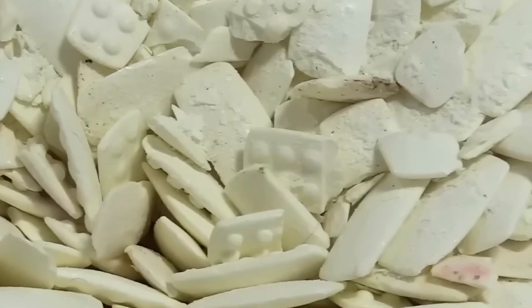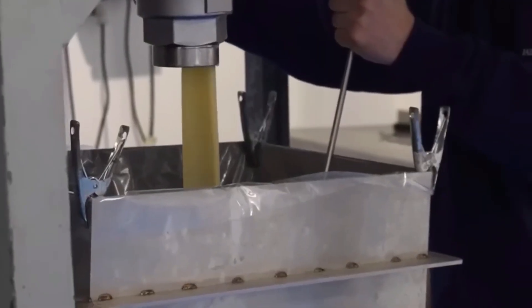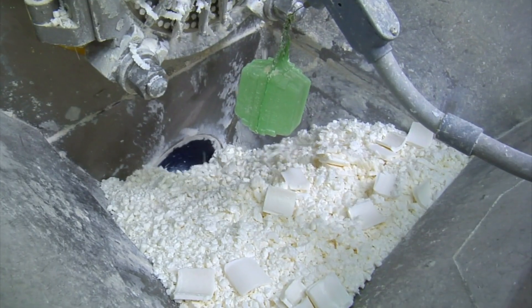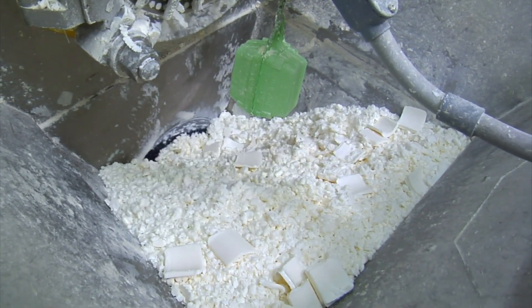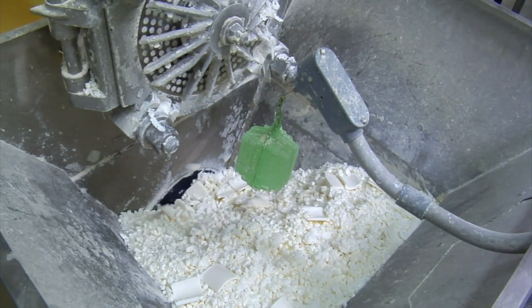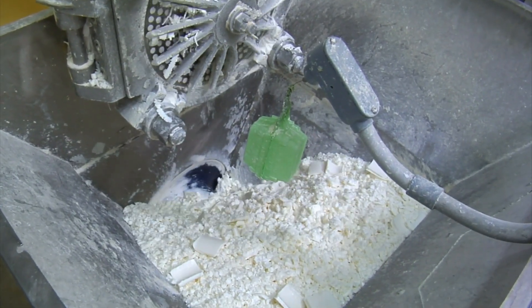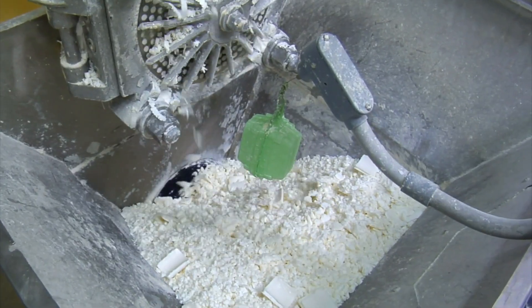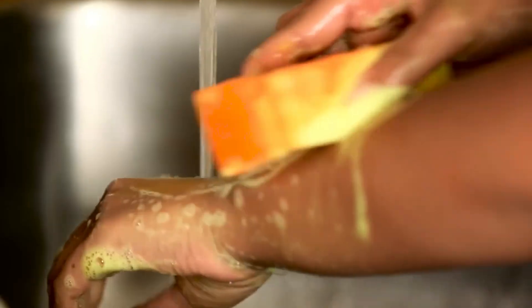And then there's the environmental side. Soap making produces byproducts—leftover alkali, impurities, and wastewater. But modern factories don't just throw it away. They recycle, neutralize, or repurpose it, turning waste into useful materials and keeping the planet clean too. Because what good is a bar of soap if it pollutes the world it's meant to cleanse?